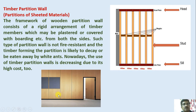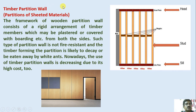Timber partition walls — you can observe the view here. For a timber wall, vertical members are provided which are called struts, which are supported by noggins and also supported from the head and sill provided there. Timber partition walls are partitions of a seasoned material. The framework of a wooden partition wall consists of a rigid arrangement of timber members which may be plastered or covered with boarding, etc., from both sides.